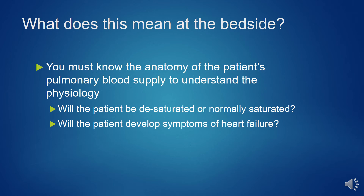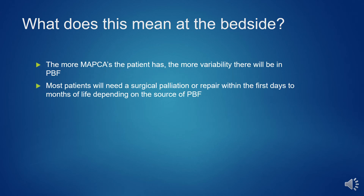One must know the anatomy of the patient's pulmonary blood supply to understand the physiology—whether the patient will desaturate or develop symptoms of heart failure. The more MAPCAs the patient has, the more variability there will be in PBF, and most patients will need surgical palliation or repair within the first few months of life depending on the source of pulmonary blood flow.